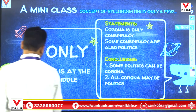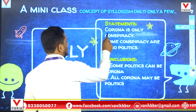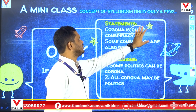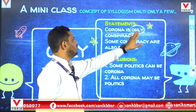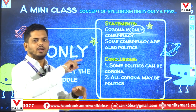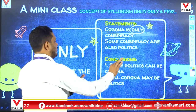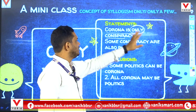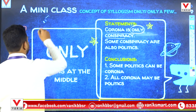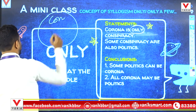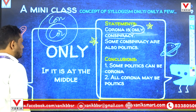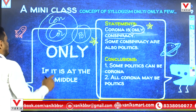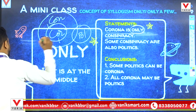Now the case where 'only' is given in the middle part of the sentence. Example: 'Corona is the only conspiracy.' Here 'only' is given in the middle of the sentence. Whenever 'only' is connected with a word, that element becomes the outer part. So in this case, conspiracy becomes the outer part and corona is the inner part. When 'only' is in the first part, the second part becomes all. When 'only' is in the middle, the first part becomes all. And the inner part is always negative from all other items.